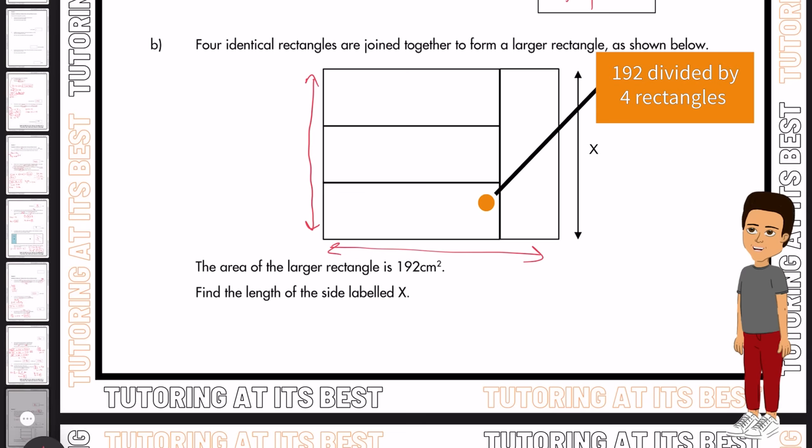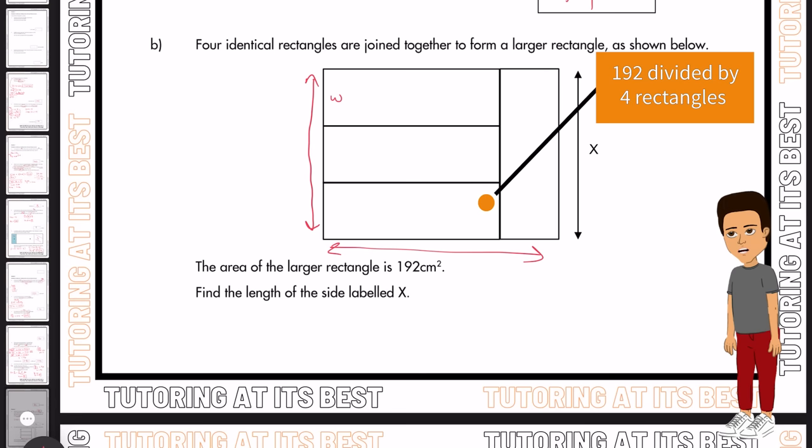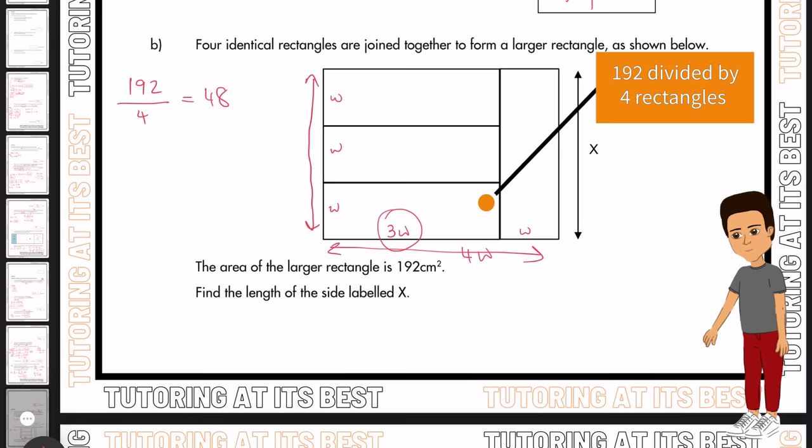So if we take a look at the left-hand side here, we have three widths which equal to 1X essentially. So we're going to label this as your width, your width, and your width. And then we'll also label this section as width as well. So if we know that three W's equal one width, then we could have three W here. So we now know that's four W's in total. But we want to calculate what three W's are worth. So we'll have 192 divided by 4, which gives you 48. We'll then times that by 3 and that gives us 144.